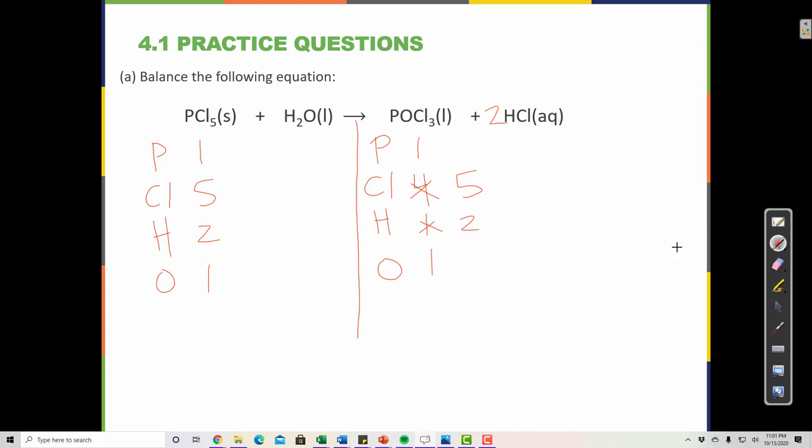Because phosphorus is balanced, one and one, five and five, two hydrogens on this side, two on this side, one oxygen and one oxygen. So that one's balanced.